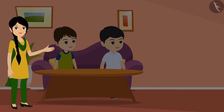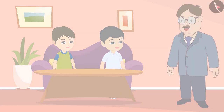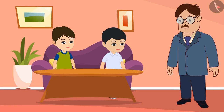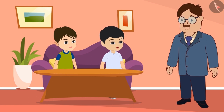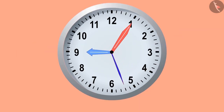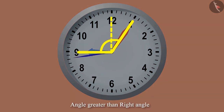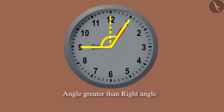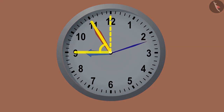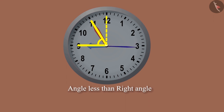Golu and Bholu carefully observe the hands of the clock, and then their uncle enters the house. Why are you looking at the clock so carefully? Uncle, do the hands of the clock form angles? Yes, Golu. Now look — it is 5 minutes past 9, and the two hands are making an angle greater than a right angle. In the same way, when it is 5 minutes to 9, they would be making an angle less than a right angle.